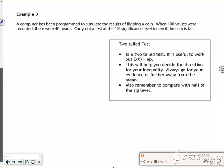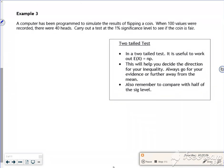So it says a computer has been programmed to simulate the results of flipping a coin when 100 values, so N is 100, were recorded there were 40 heads. Carry out a test to see if the coin is fair. So if the coin is fair, would I expect P to be a half?